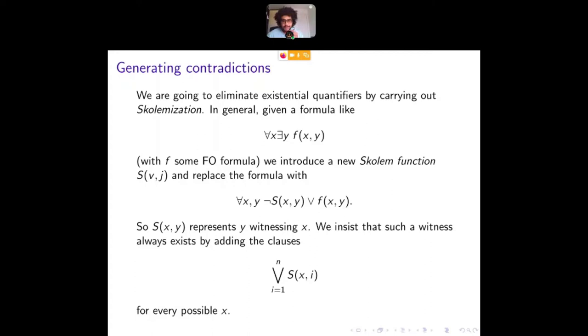So we're going to eliminate the existential quantifiers first by essentially introducing more relations. This is an old idea called Skolemization. And in general, if we have a formula like this, for all X, there exists a Y such that some first order formula holds. If this is true, then there exists a function that points out what this Y is, given X. So for any X, we can produce a Y such that this thing holds. So we introduced the Skolem function here, a function just being a relation of one extra coordinate. And we replaced this with like a purely universal for all X and Y, either Y is not the chosen witness for X, or if it is, this thing holds.